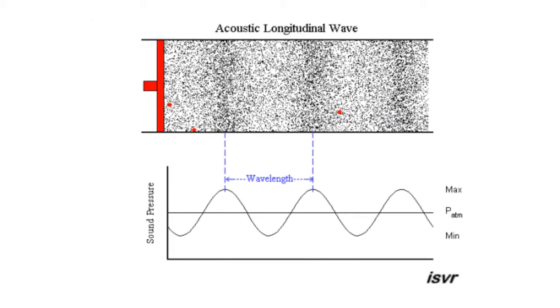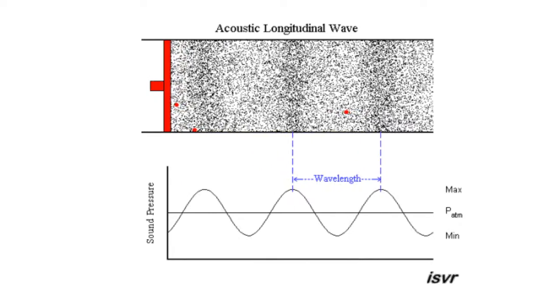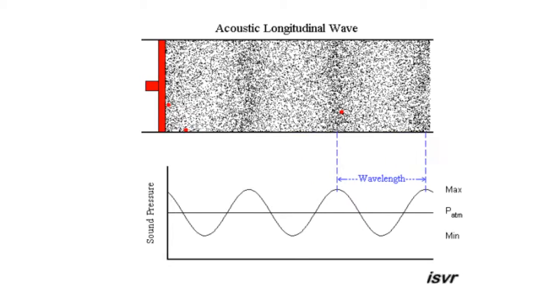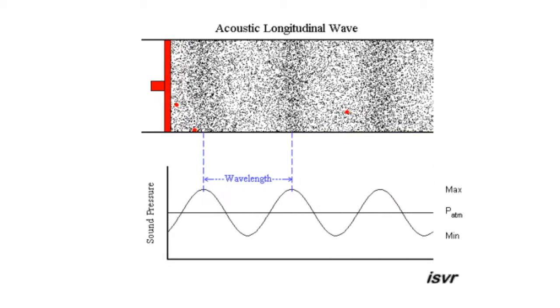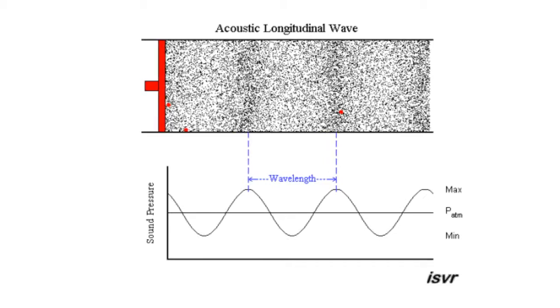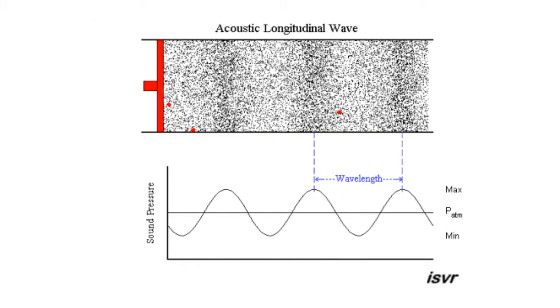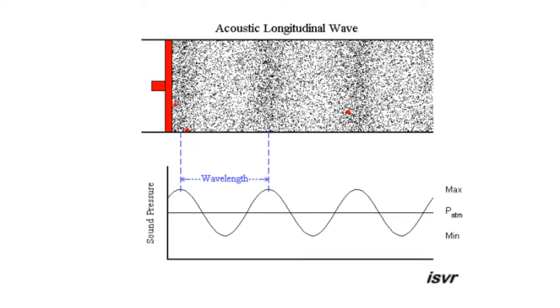It is important to mention that the particles of air themselves do not displace, but only vibrate in their point of balance. We can observe this by paying attention to any of the red dots in the first animation. This pattern continues while the object keeps vibrating.